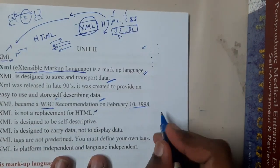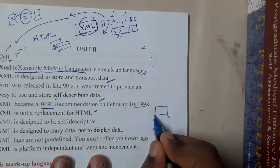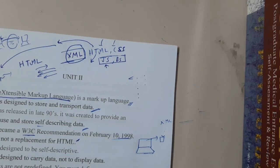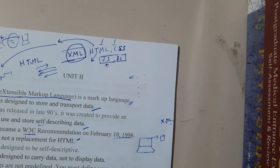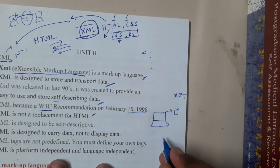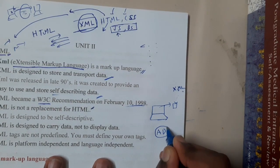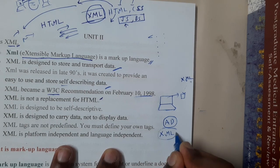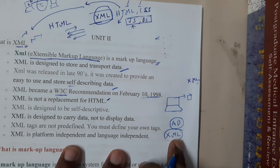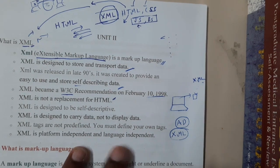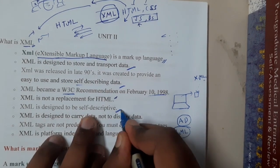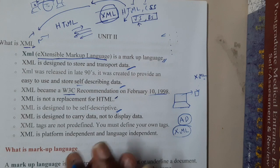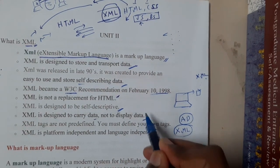Web pages are designed with HTML only, whereas data transfer and data storage is done in the form of XML files. If you have any idea about Android development, every app has a layout, and the whole layout is designed or defined in XML. So XML is not only for storing data — you can even design components. XML is designed to be self-descriptive; by observing the tags you can understand the structure since the tags are user-defined.